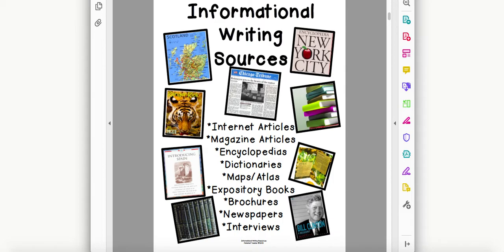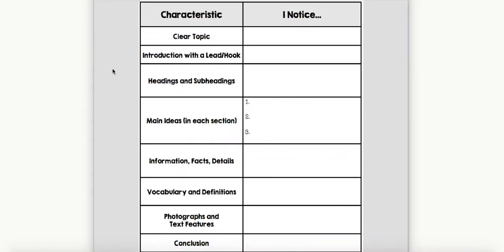Now let's talk about some of the characteristics that we see in most informational writing. Informational writing has a clear topic. The writer begins with a lead or a hook to capture your attention. The text is organized by headings and subheadings, and each section usually has its own main idea. Main ideas are supported by information, facts, and details about the topic.